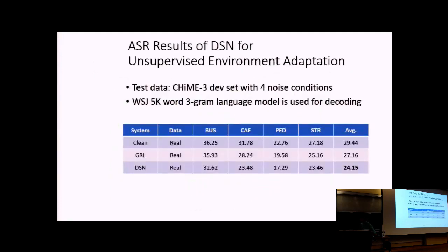ASR results: the baseline trained with only clean data gives 29% WER. Standard GRL gives around 8% relative improvement. The Domain Separation Network — a more complex architecture — gives around 18% relative WER reduction. However, the improvement is much smaller than what TS learning achieves. This adversarial approach is used only when parallel data cannot be simulated; when parallel data is available, TS learning is preferred.